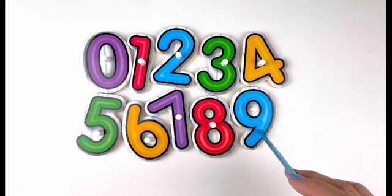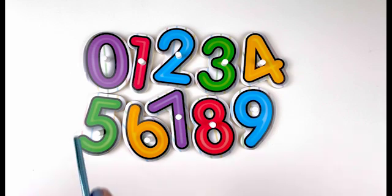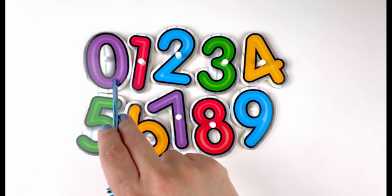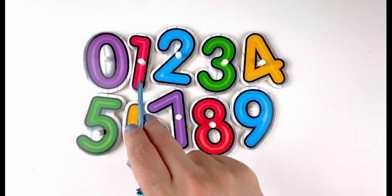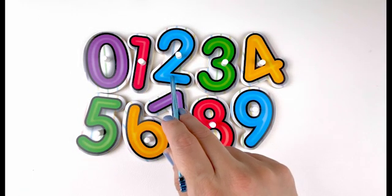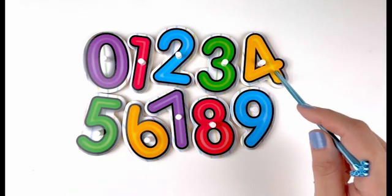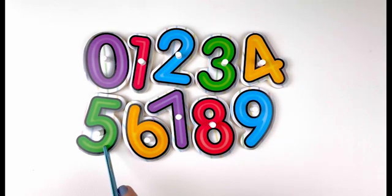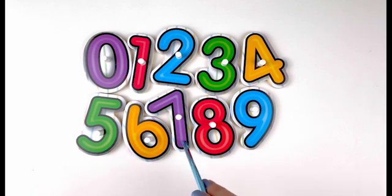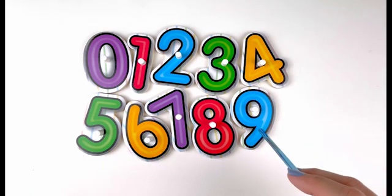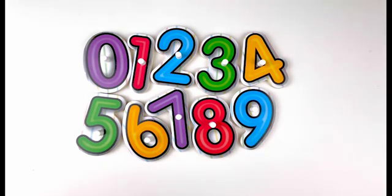So I have numbers from zero to nine. Let's count one more time: zero, one, two, three, four, five, six, seven, eight, nine. Now I would like to make number ten.